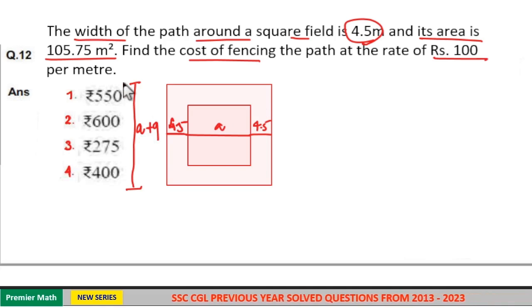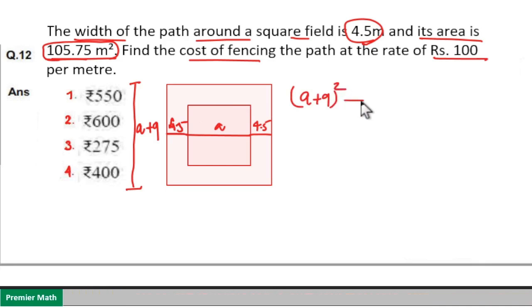And here the area of the path is given. That is larger square minus smaller square is area of path, which is larger square area, a plus 9 whole square, minus smaller square area, a square, which is 105.75, the path area.